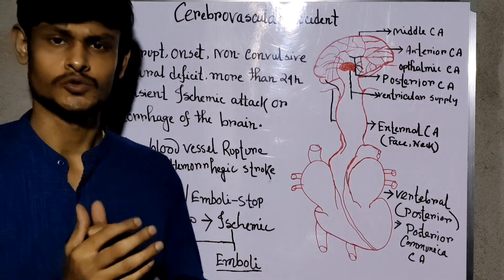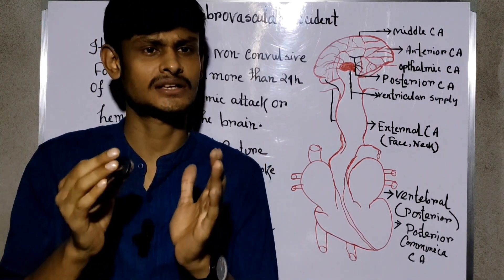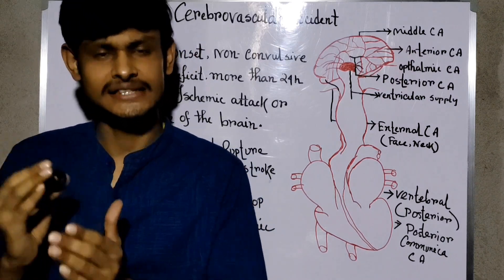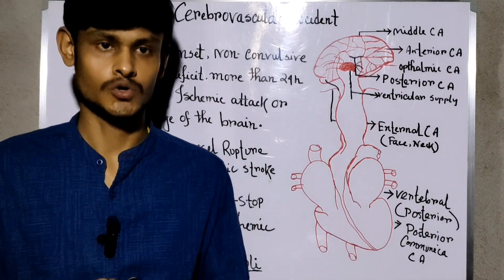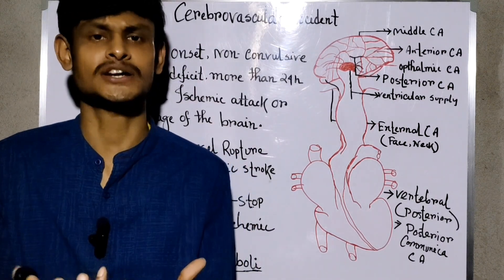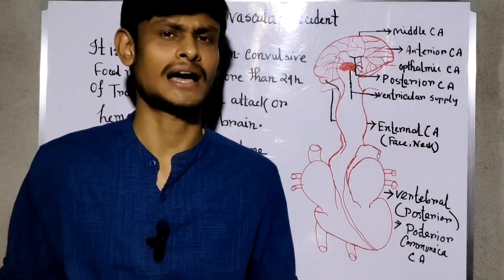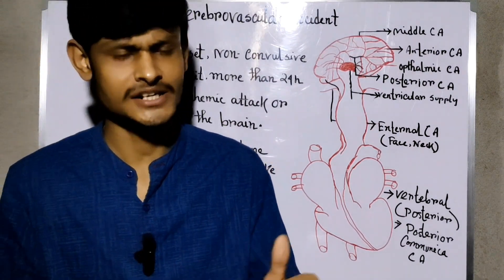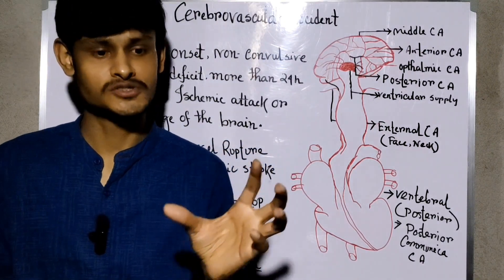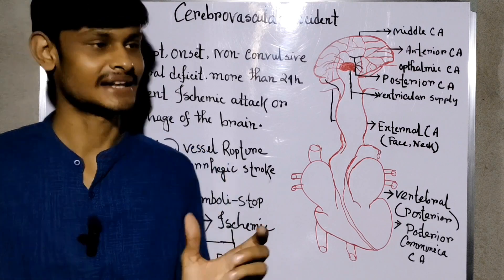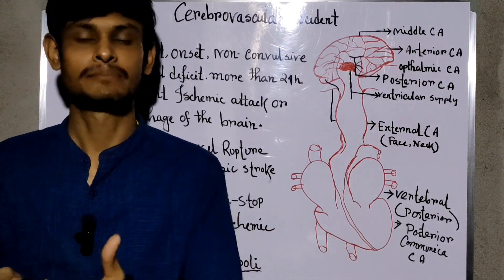Now let's take a close look at hemorrhagic stroke — how hemorrhage occurs inside the brain, what processes lead to stroke, and what the features of hemorrhagic stroke are. Many books explain hemorrhagic stroke as bleeding occurring due to weak blood vessels. Before moving on, we will first study the blood supply of the brain.